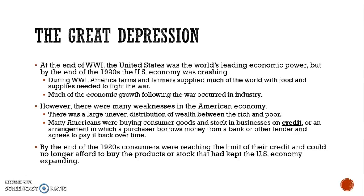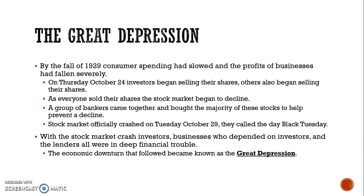Buying on credit was an arrangement in which a purchaser borrowed money from the bank or other lenders and agreed to pay it back over time. But by the end of the 1920s, many consumers were reaching the limit of their credit and could no longer afford to buy the products or stock that had kept the U.S. economy expanding. By the fall of 1929, consumer spending had slowed and people stopped buying consumer goods. The profits of businesses had also started falling severely. On Thursday, October 24th, investors began selling their shares in the stock market, and soon everyone was selling, causing the stock market to decline.